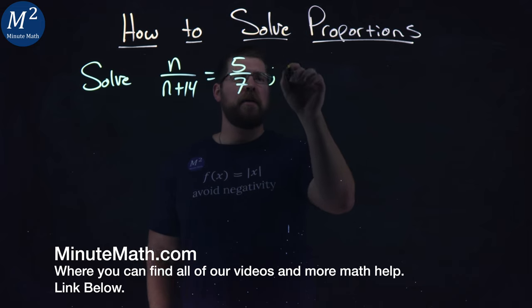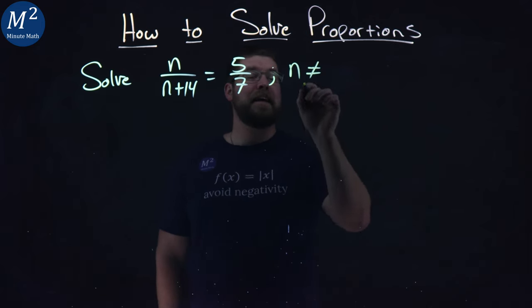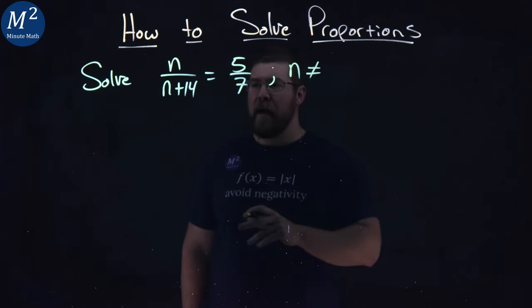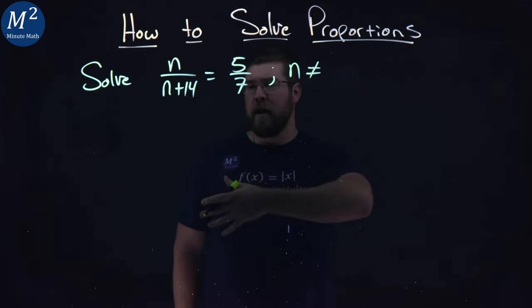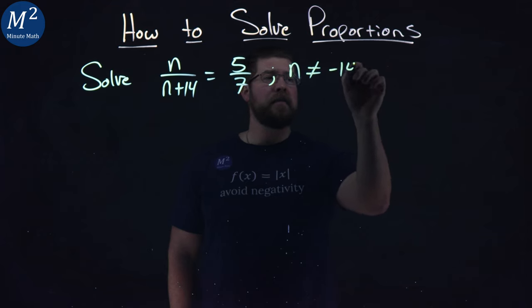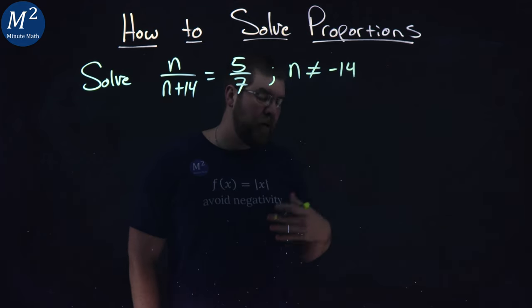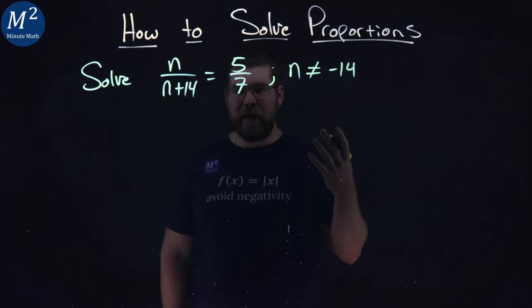Now the first thing I want to do here is determine what n cannot equal, and that comes really from our denominator right here. We're not allowed to divide by 0 in mathematics, and so negative 14 for our n value creates a 0 in that denominator, and we can't have that.